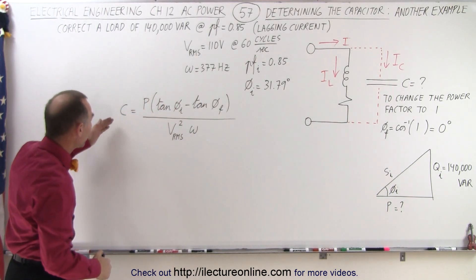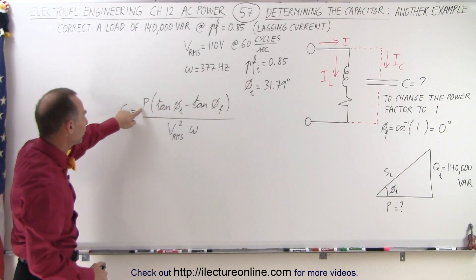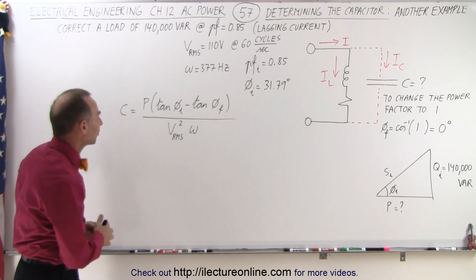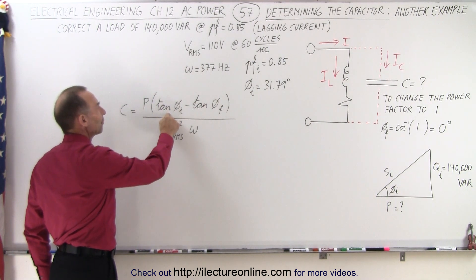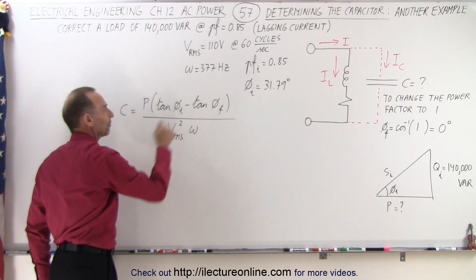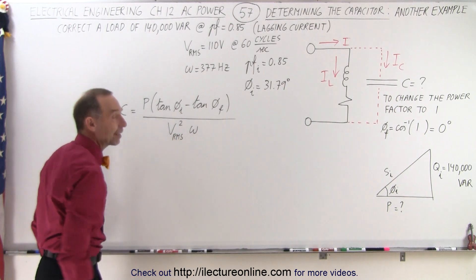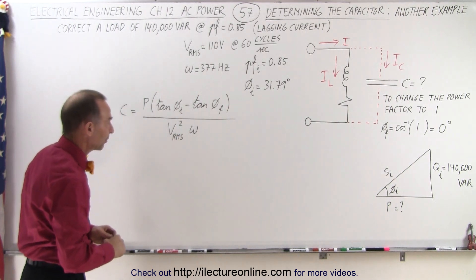And then we're going to use the equation where the capacitor required is equal to the power for the resistor times the difference between the tangent of the initial phase angle and the tangent of the final phase angle. We divide by VRMS squared and divide by omega, the angular frequency of the circuit.